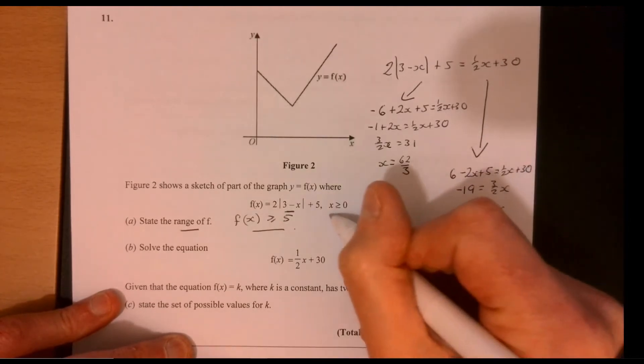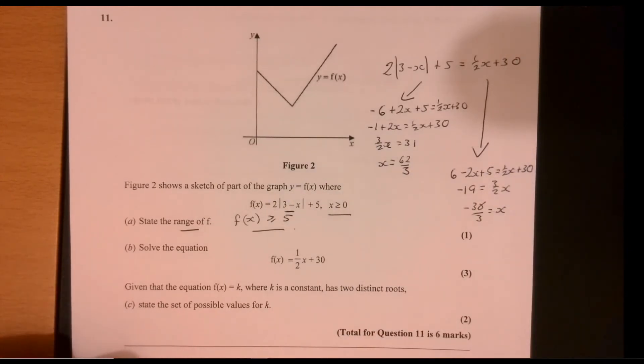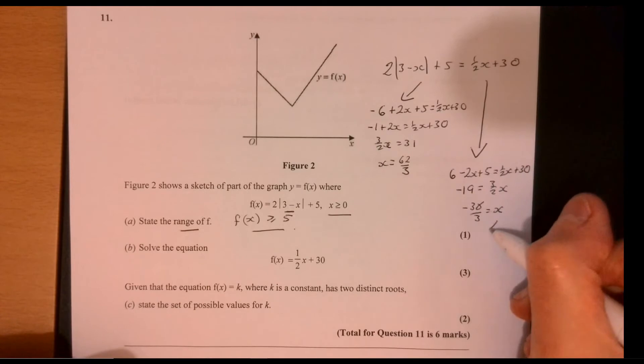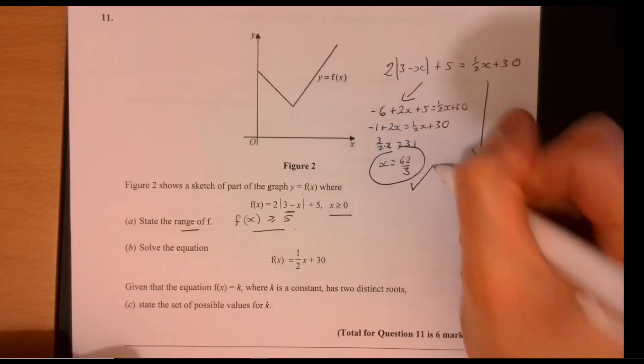Right. What do we know about x? x has to be more than or equal to 0. So therefore it cannot be that. It's got to be that option.